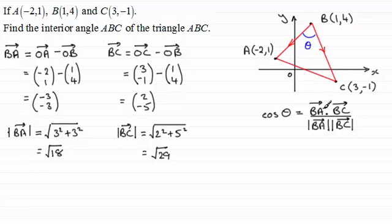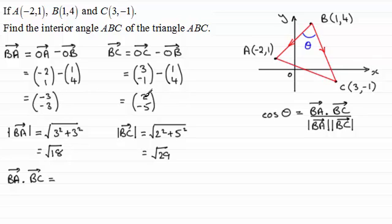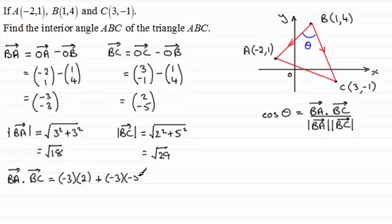Next we need BA dotted with BC. Dotting these two vectors together, we have (-3 × 2) added to (-3 × -5). That gives us -6 + 15, working this out we end up with 9.